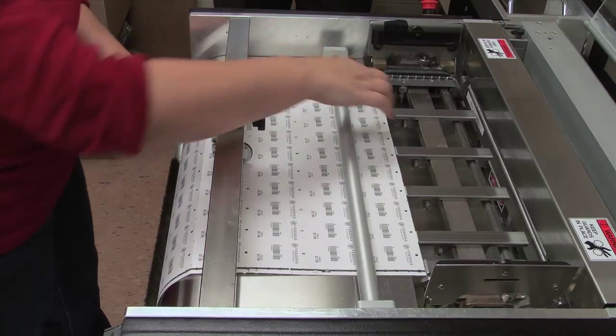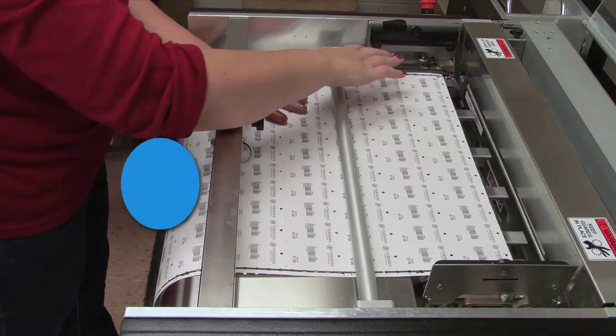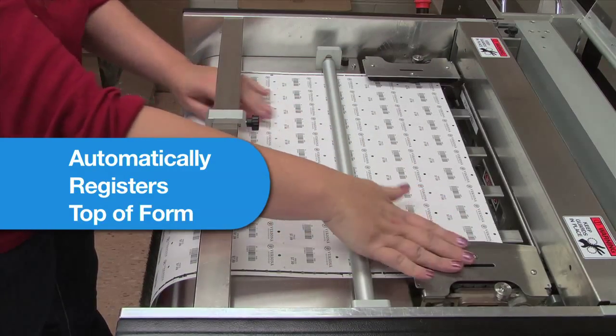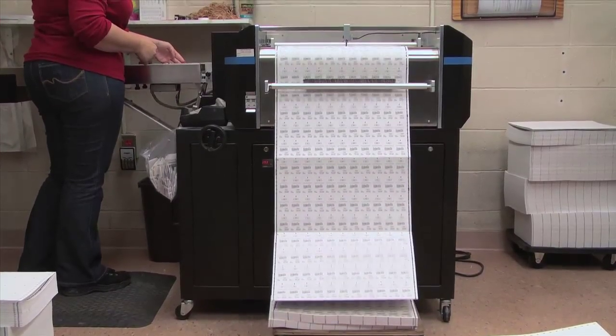Cut your printed forms down to individual tags or labels with Sato's CS9018 Cutter Stacker. Loading paper is quick and easy with our automatic top of form registration.